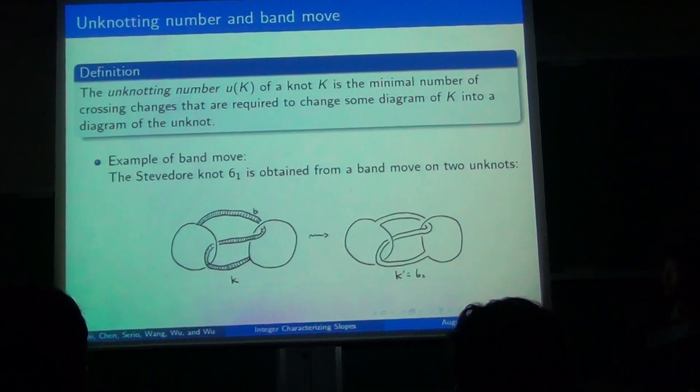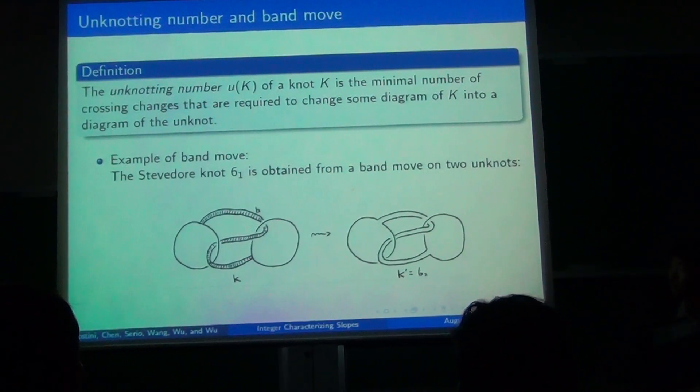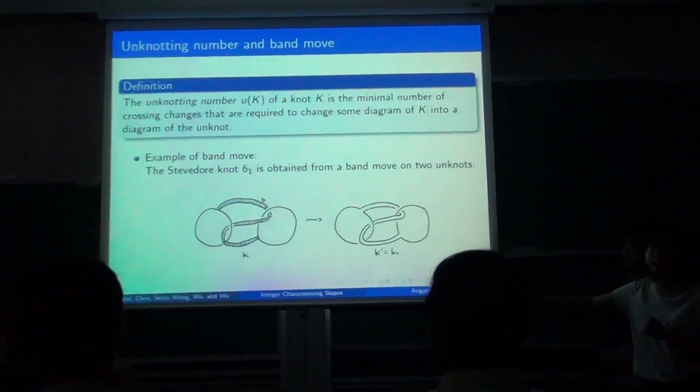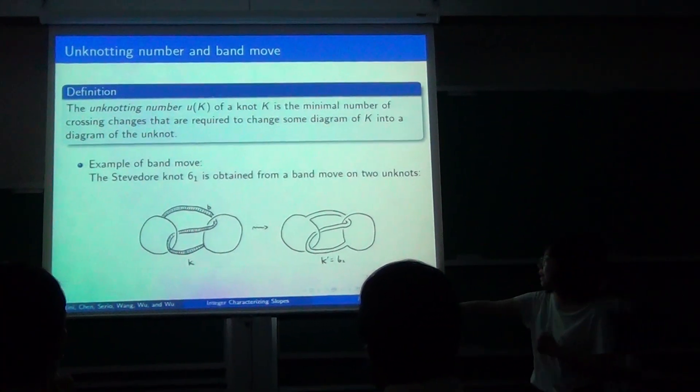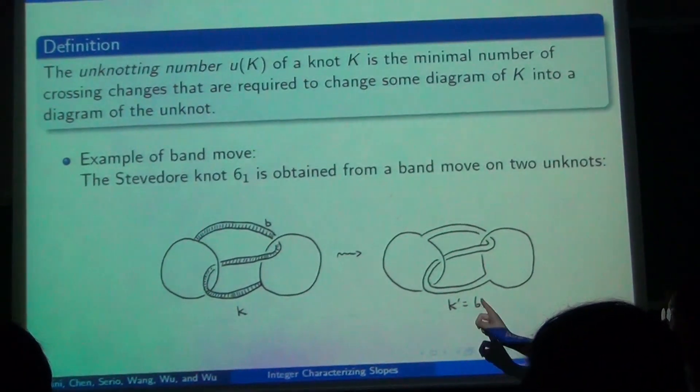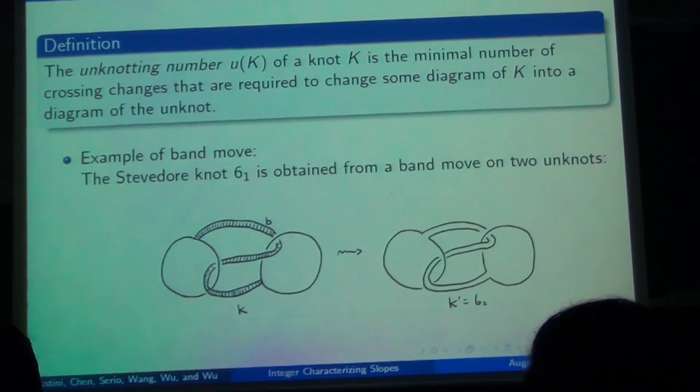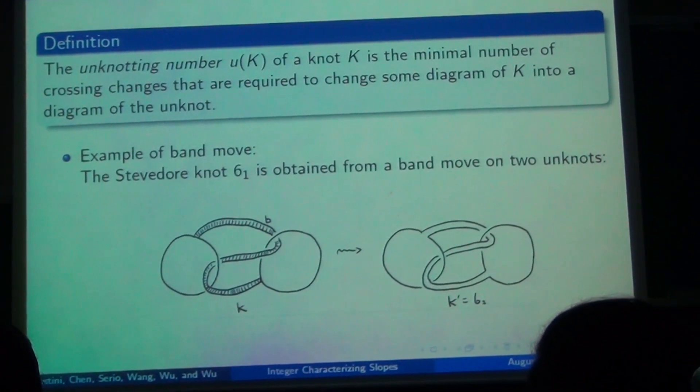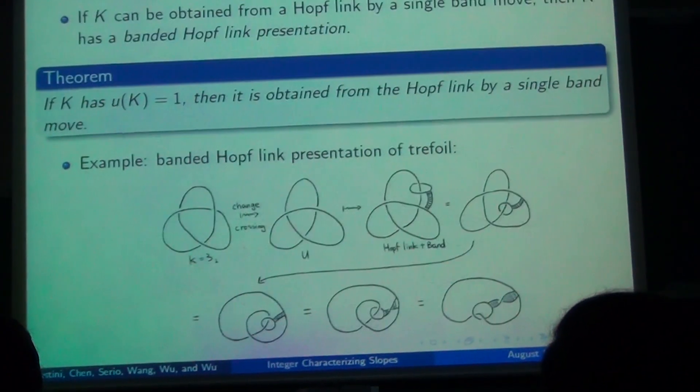And I will illustrate this by example, the knot 6₁. As we see, the knot K is originally not unknot, and by doing a band move, we mean that we add another band. If we delete the interior of the band and keep the other two edges, we get another knot K prime. So K prime is obtained by doing a band move on knot K.